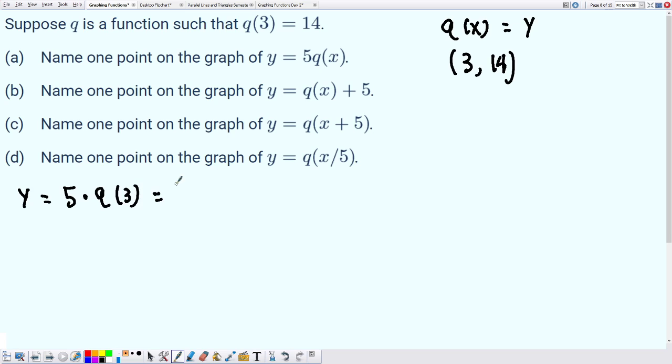q of 3, we have already figured out, is 14. And then 5 times 14 is 70. So what is a point that's going to be located on f of q of x? That would be the point 3 comma 70.